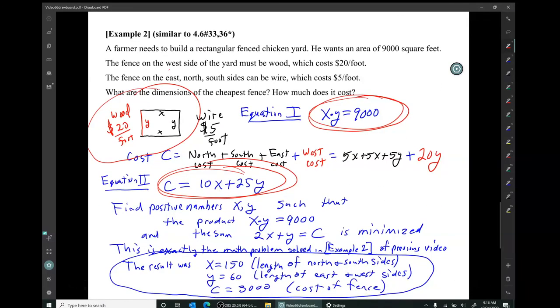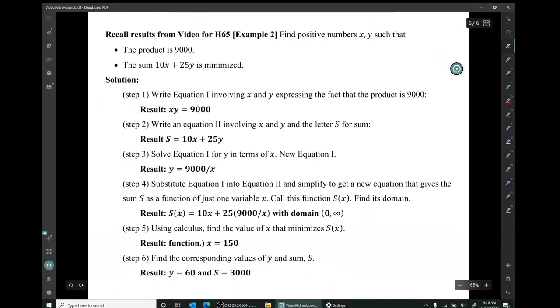In the second example, in which the product had a fixed value and we were trying to minimize the value of the sum, the resulting math was quite a bit harder. The resulting function was this unfamiliar form, 10x plus 25 times 9,000 over x. So that was not a familiar function form. We could not make an argument about the shape of that graph just right off the bat. So when we analyzed that problem, it was much harder.